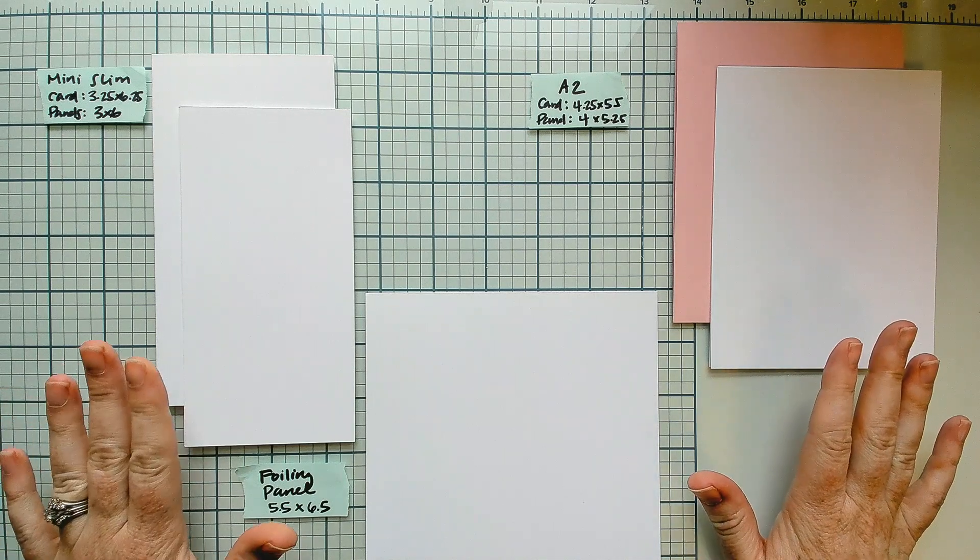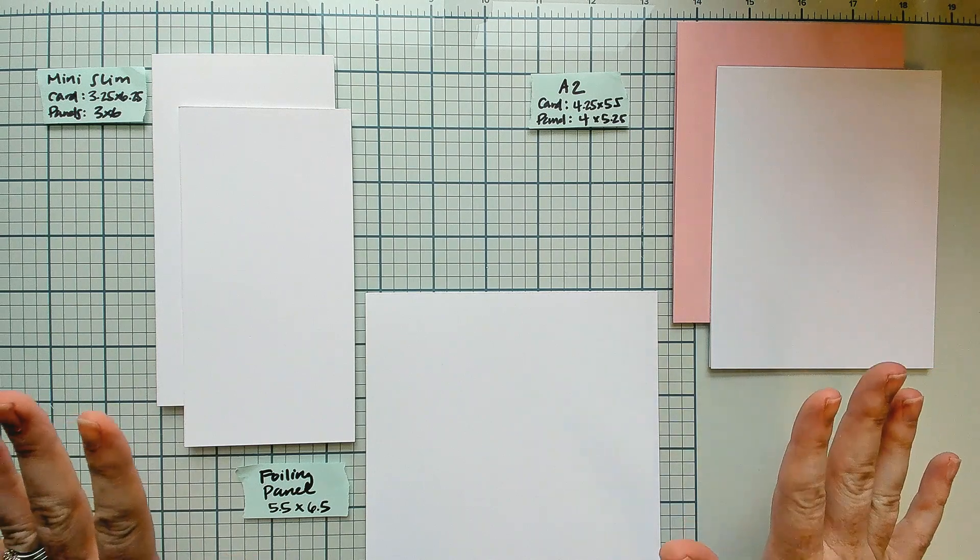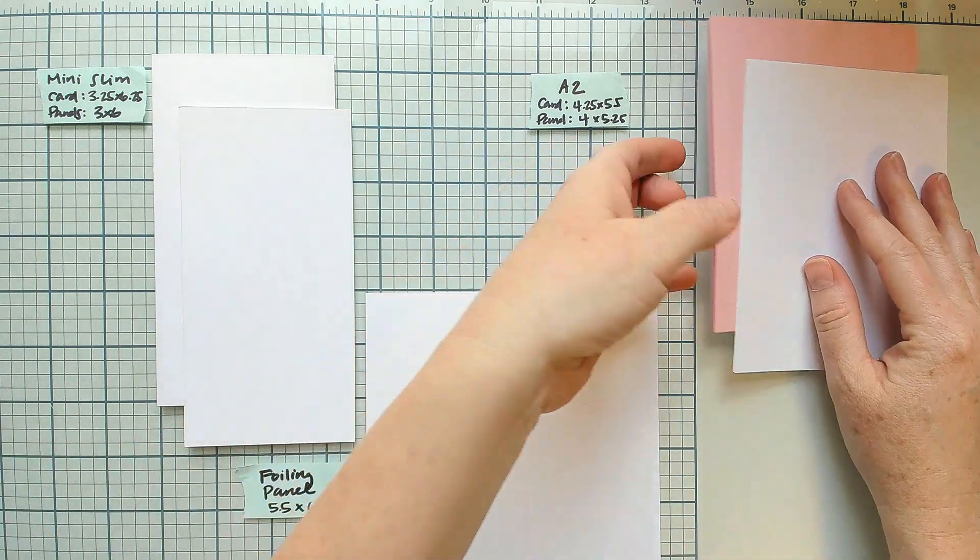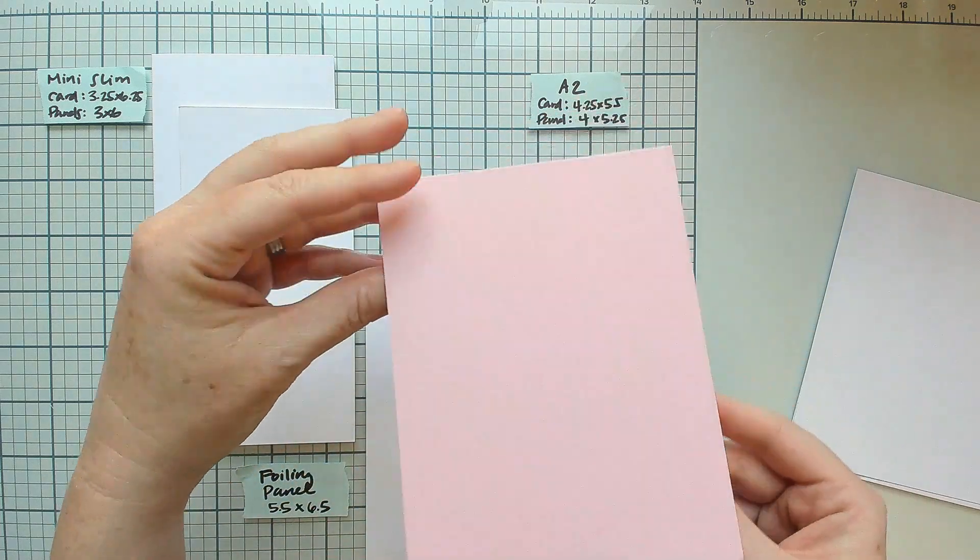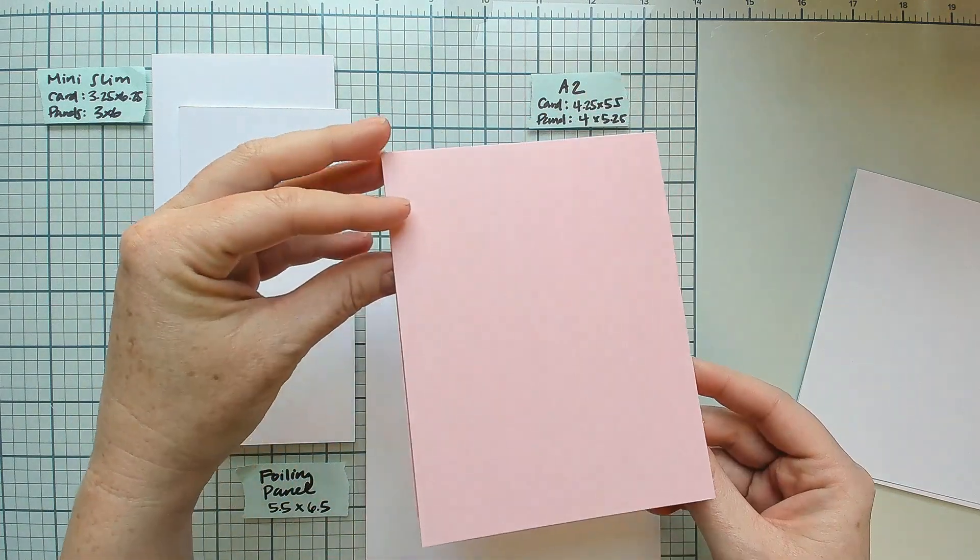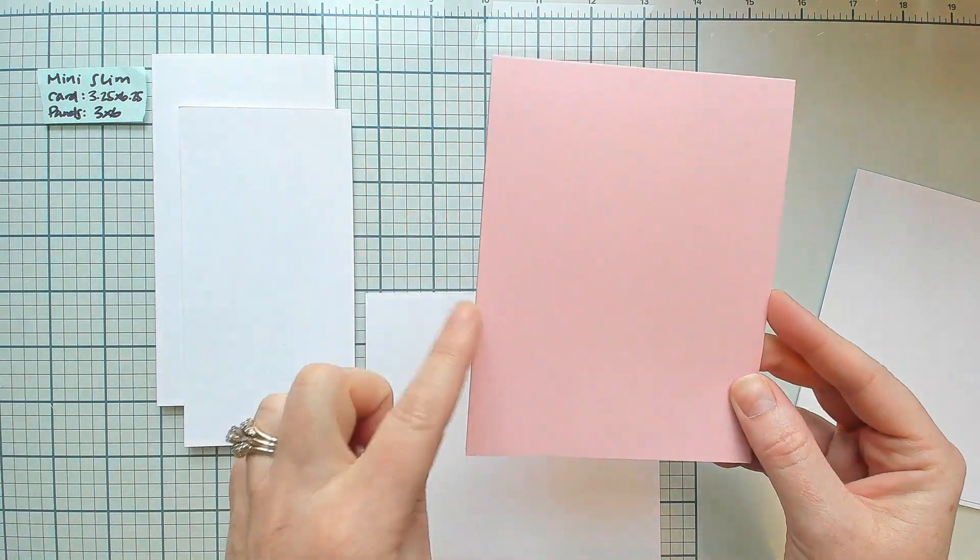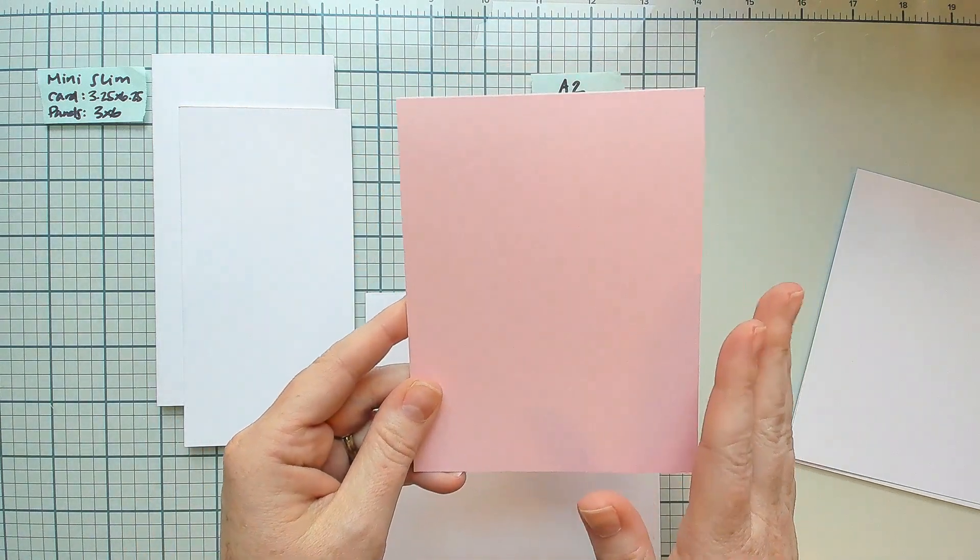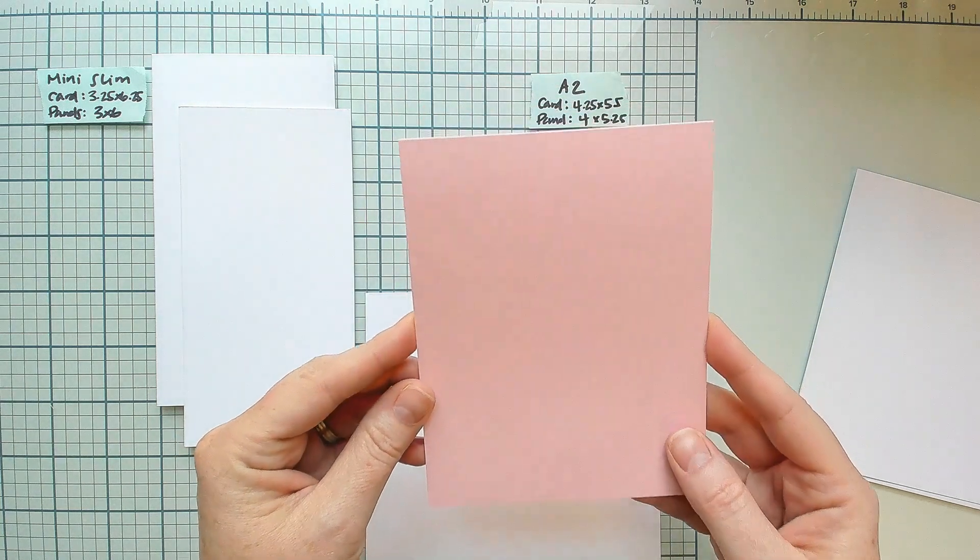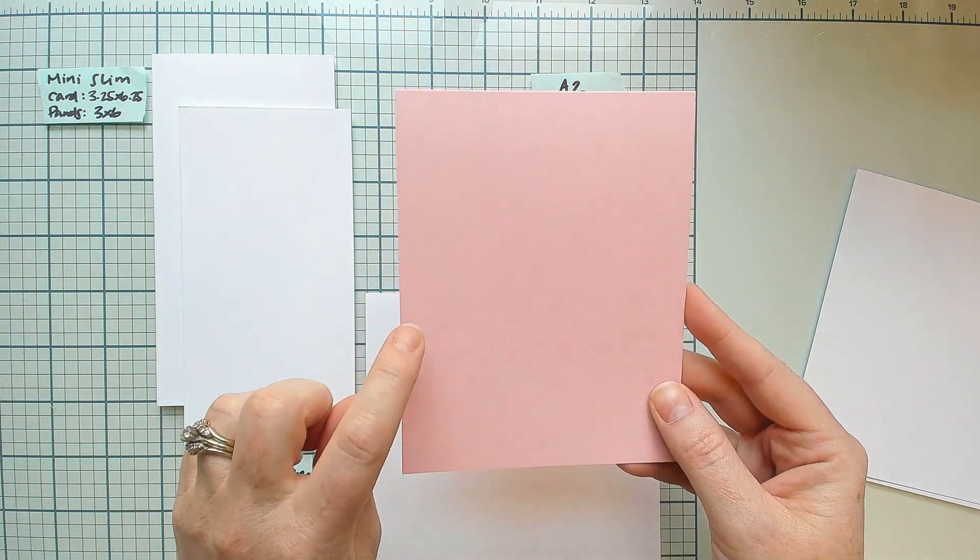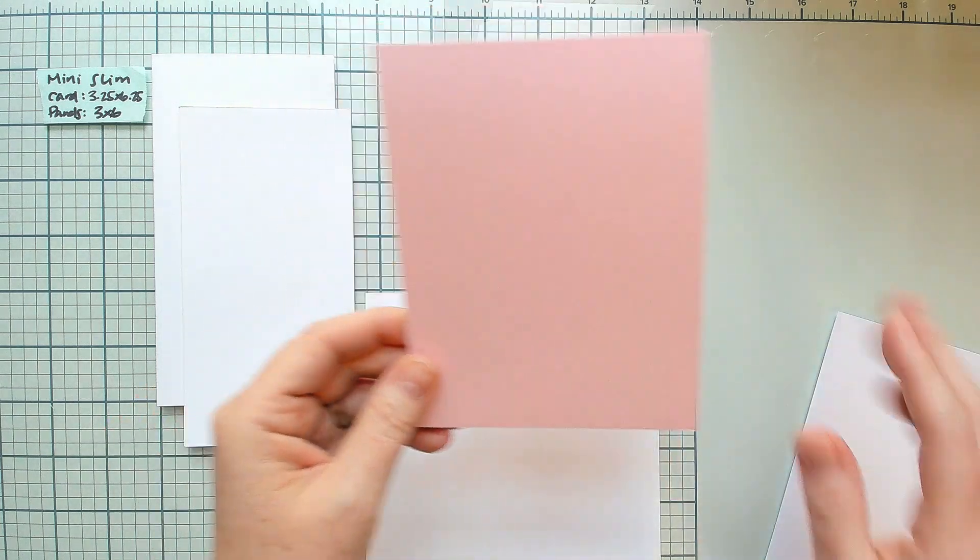We're going to do an A2 sized and a mini slimline card in class. For your A2 sized card, I would like you to prep a 4.25 by 5.5 inch card base. I prefer top folding, but this can be whatever your preference is. This is pink sand cardstock from Spellbinders, but any light pink cardstock will do.